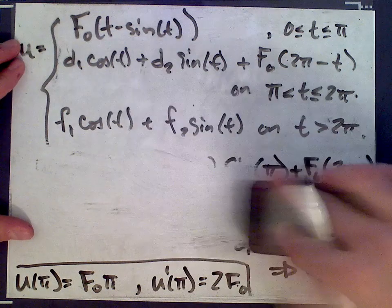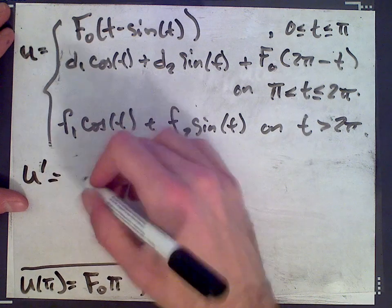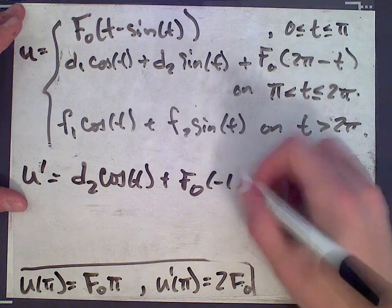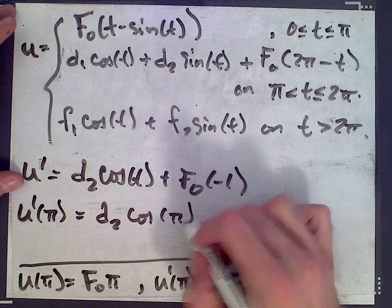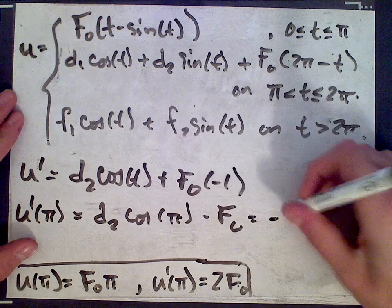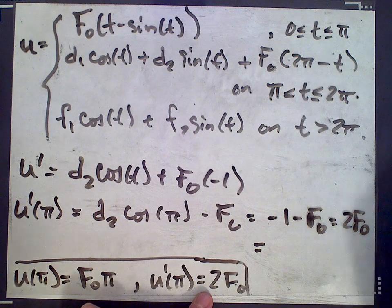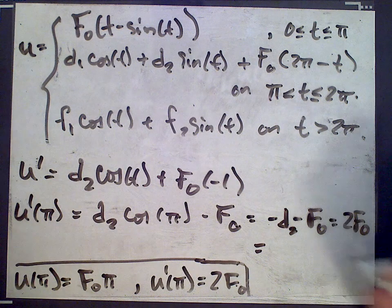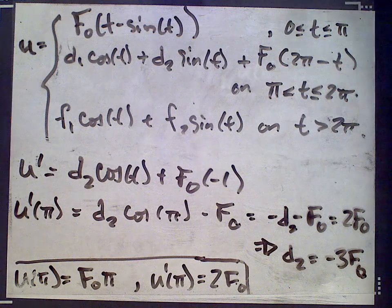d1 is 0. What about d2? Well, let's take the derivative. We know d1 is 0. So in that case, the derivative of u, again on the interval from π to 2π, is going to be d2 cos(t) plus f0 times negative 1. And then u'(π) is d2 cos(π) minus f0. So we're solving for d2. Cos(π) is negative 1, so it's negative d2 minus f0. And we're told this is equal to 2f0 down here. So we end up with, sorry, so this is negative d2 minus f0. So we get d2 is negative 3f0. So d1 is 0 and d2 is that.